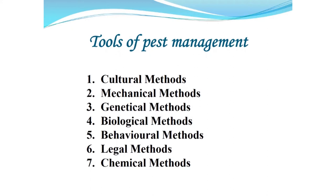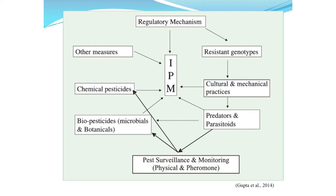Legal methods enforce rules and regulations at central and state levels to reduce the introduction, spread, and damage of insects. Ultimately, chemical methods using synthetic insecticides are the last resort. The sequence works as follows: cultural and mechanical practices first prevent insects; then predators and parasitoids coupled with periodic pest surveillance and monitoring determine the action threshold; chemical pesticides or biopesticides like microbials and botanicals are used based on the economic threshold level to suppress insect pests.